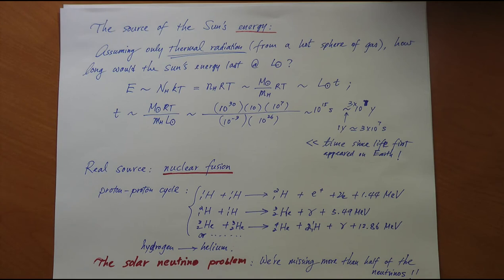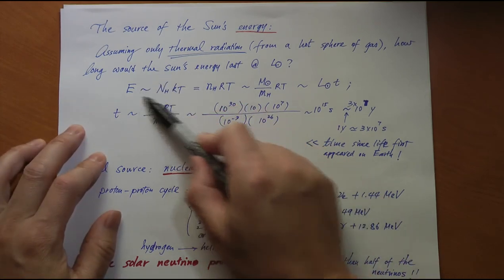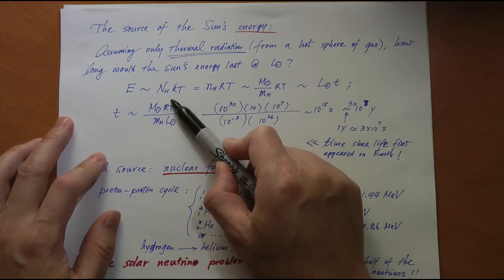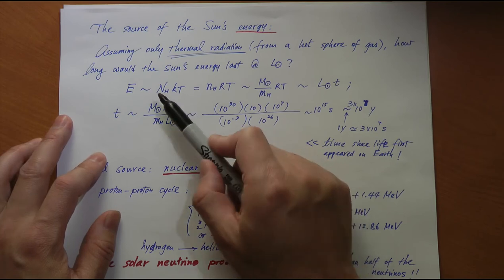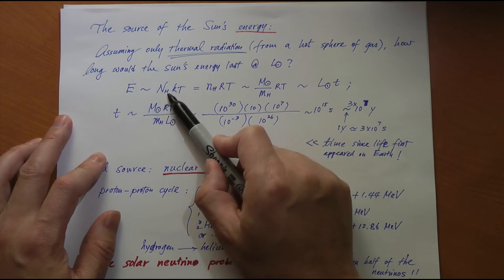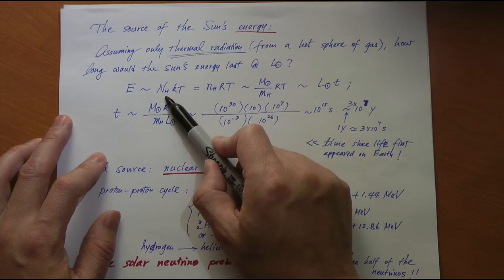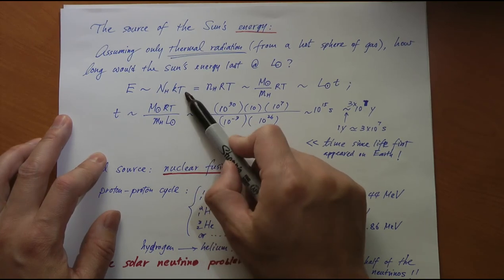If that is the case, then at today's radiation rate, or today's luminosity, how long can the sun's energy last? This would be the total energy of the sun, only from its thermal radiation of the particles. That's the number of protons in the sun times kT, roughly. It's like 3/2 kT, but who cares? Roughly, that's order of magnitude.